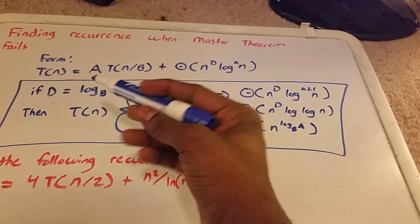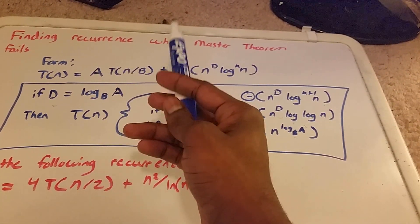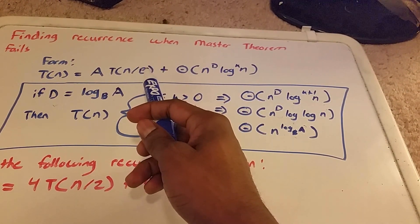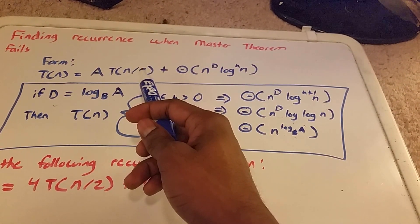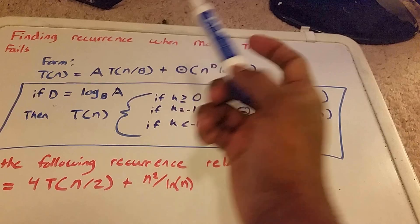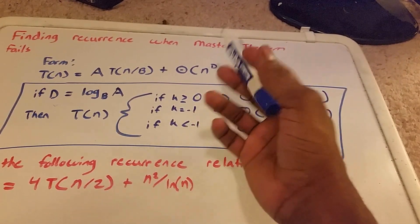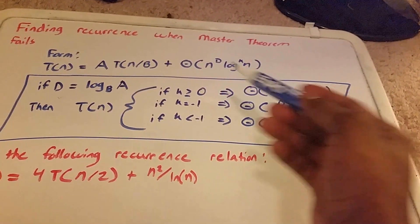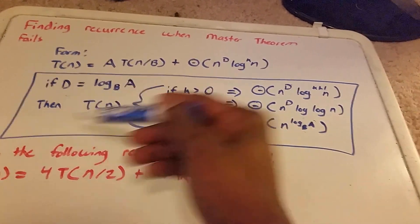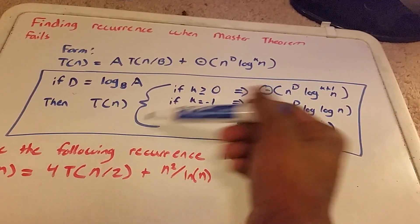Specifically, A has to be greater than or equal to 1, and B has to be greater than 1. So if D is greater than 0, so we have this equation here, or this formula.